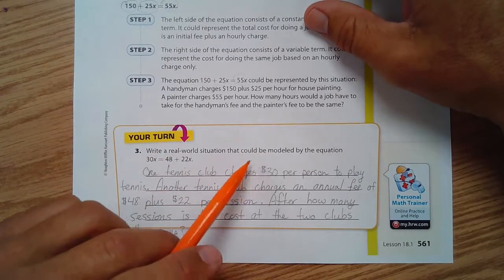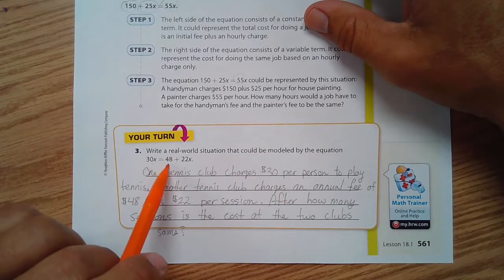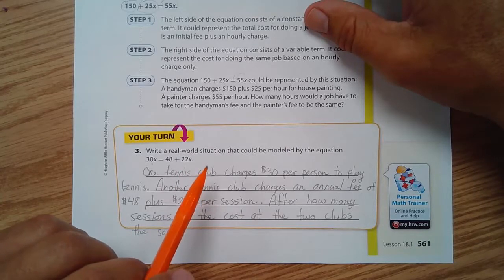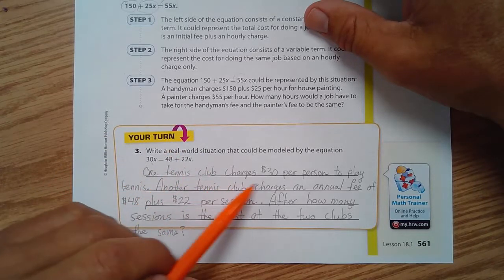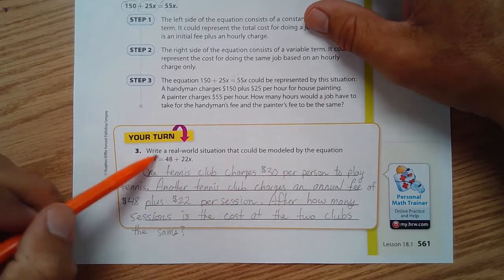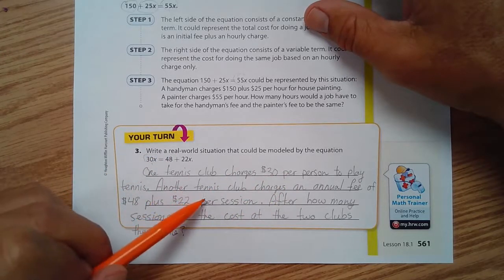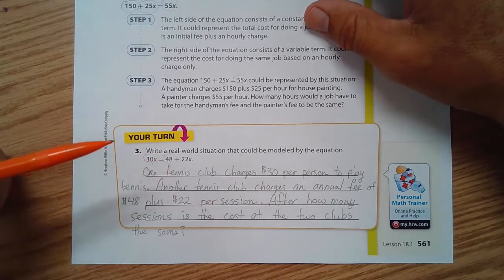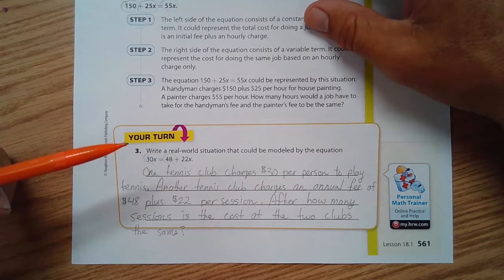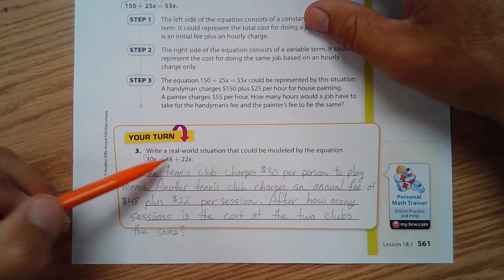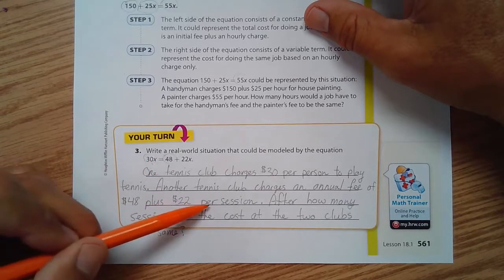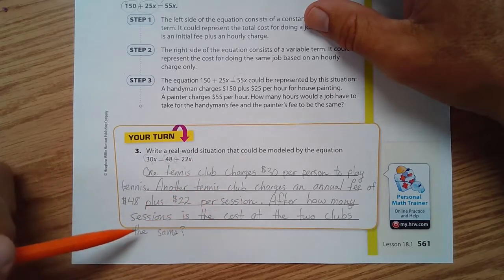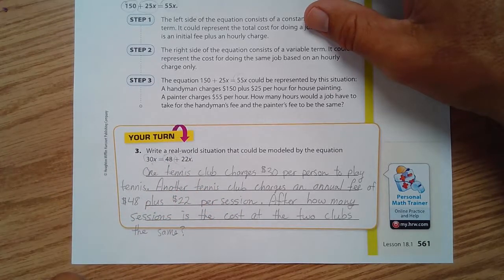Write a real-world situation that can be modeled by the equation 30x equals 48 plus 22x. In this one, a tennis club charges $30 per person to play tennis. Another club charges an annual fee—you pay that annual fee one time a year first—plus $22 per session. After how many sessions is the cost of the two clubs the same?